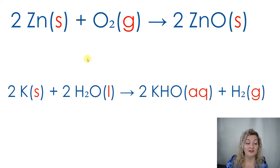Now you can understand it a little bit better, right? If you look at the next one, we have potassium, which is a solid. We're combining that with liquid water. And when you combine those two together, you're going to produce or yield potassium hydroxide, which is an aqueous solution.